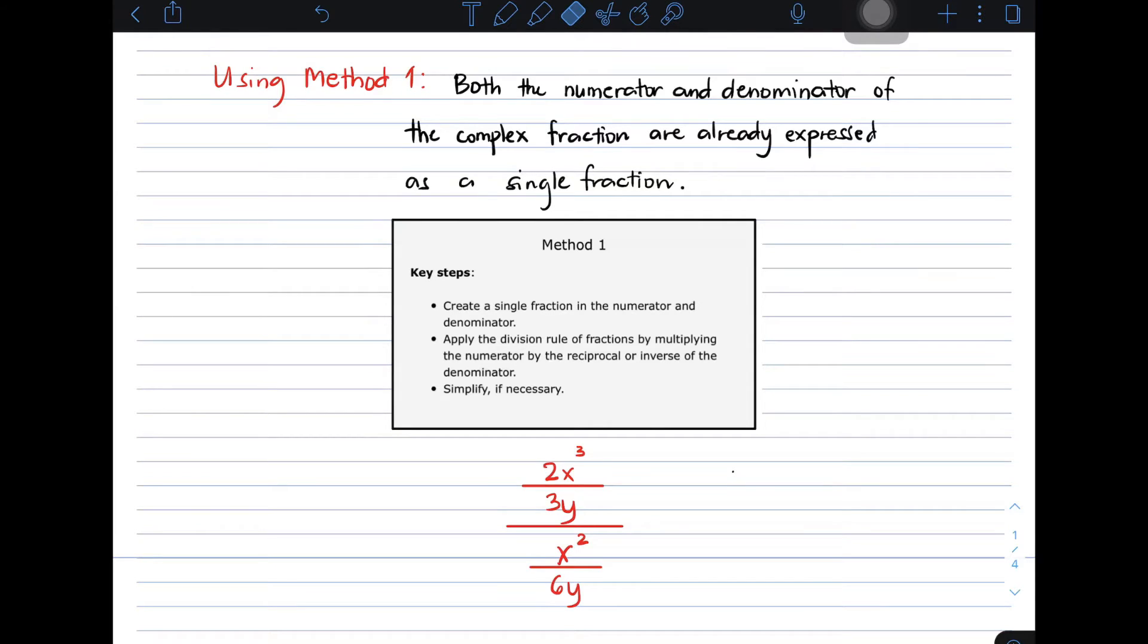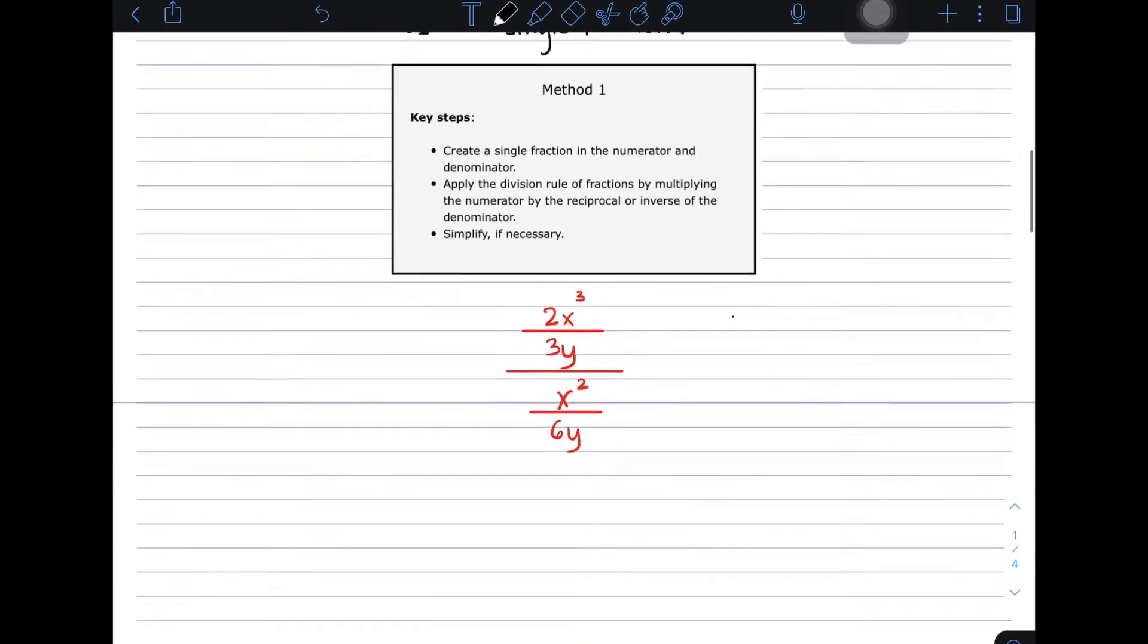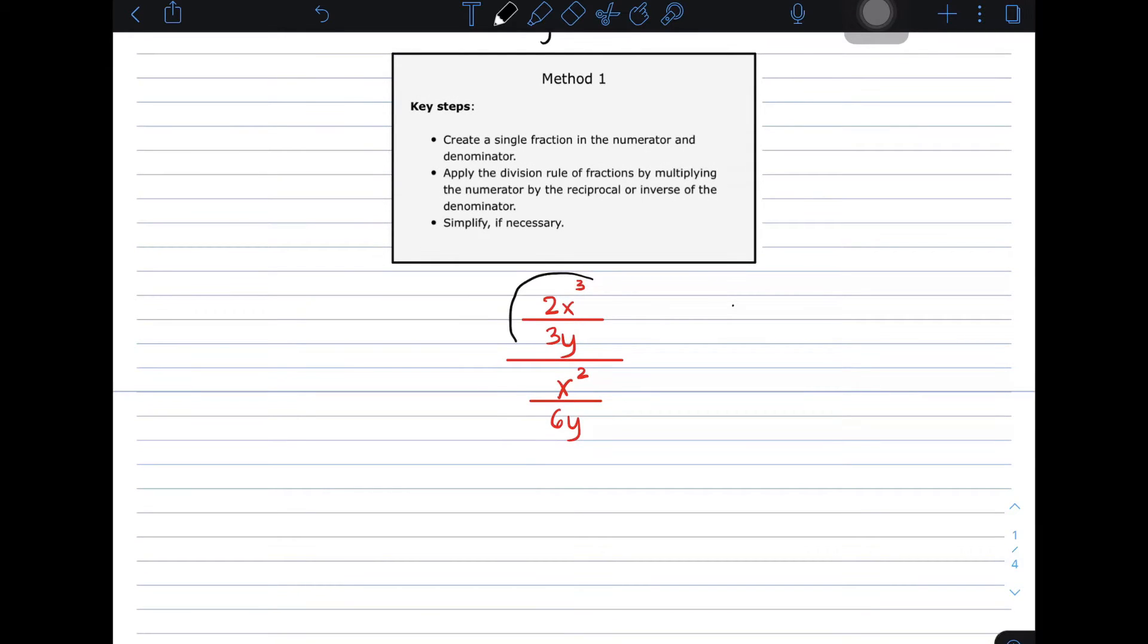So since our numerator and denominator are already single fractions, let's elaborate. This part, this is our numerator of the complex fraction, this one is already a single fraction. And then, the denominator x squared over 6y is already a single fraction.